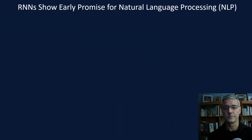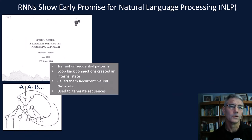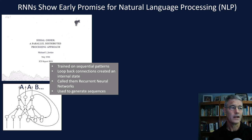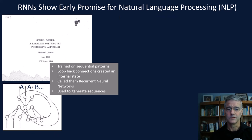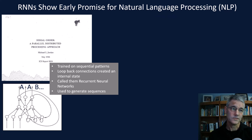RNNs showed early promise for natural language processing. Back in the 80s, Michael Jordan — the prominent researcher, not that Michael Jordan — looped portions of a neural network back on itself to create a state of mind, like we just saw. Three neurons acted like a kind of memory — an internal state dependent on the past that could predict or affect the future. He named these recurrent neural networks. He trained them on sequences of two repeating characters by hiding the next character in the sequence and having the network guess it. The difference between the guess and the actual letter — the truth data — was used to generate a loss function and adjust the network's parameters to help it better learn the sequence.